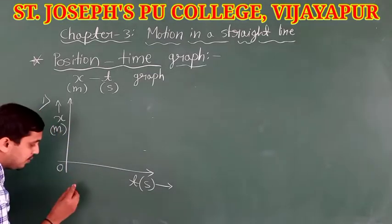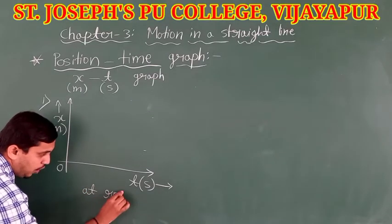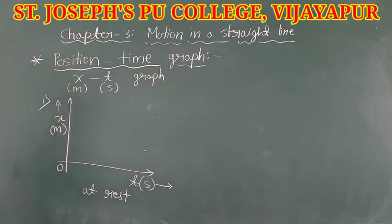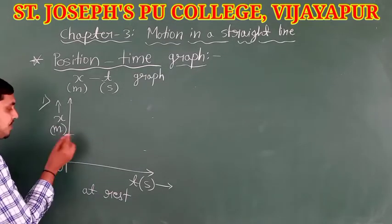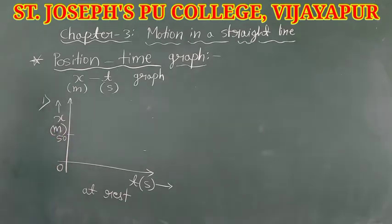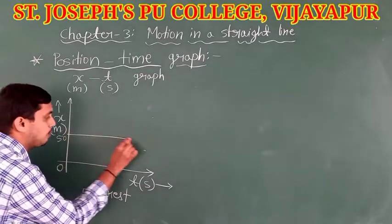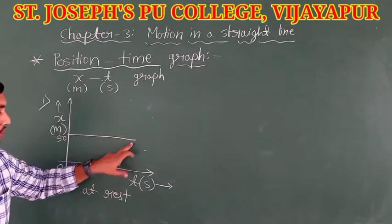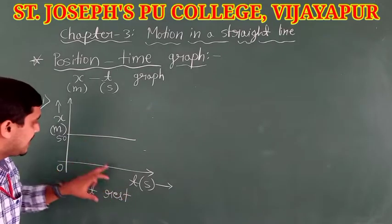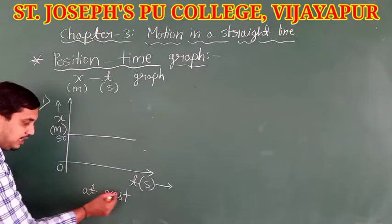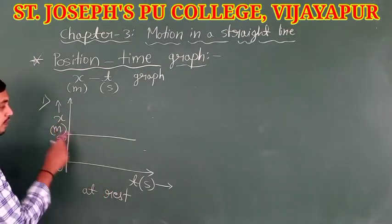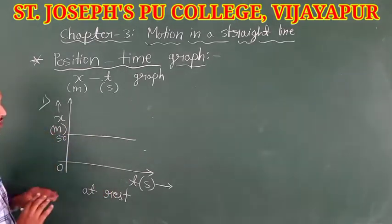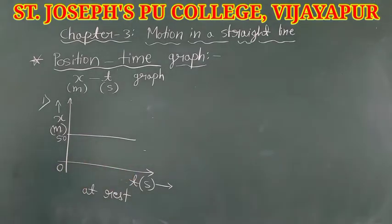Particularly, let us see the case where the object is at rest. If an object is at rest at 50 meters, then with respect to time, that position is the same — it does not change. The curve is a straight line which is parallel to the time axis.